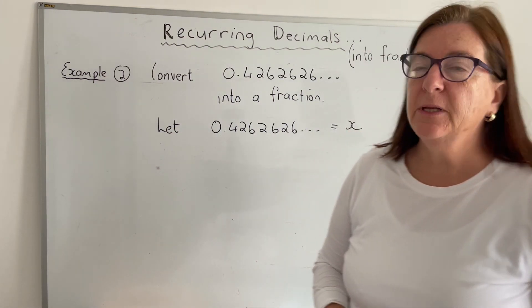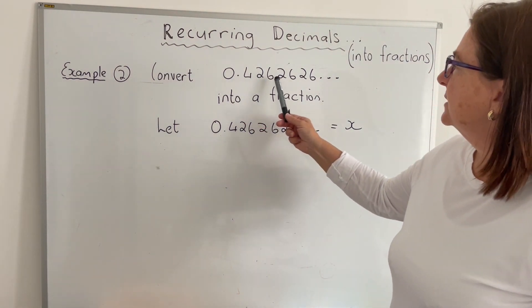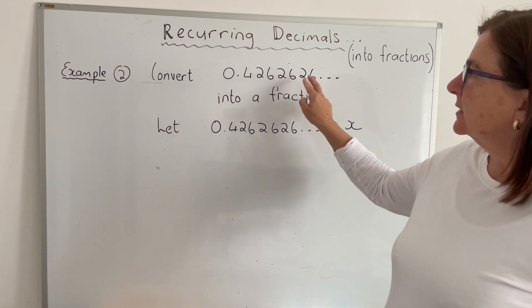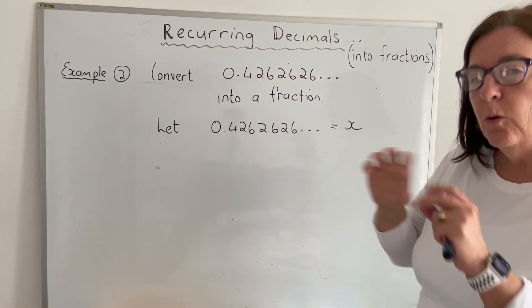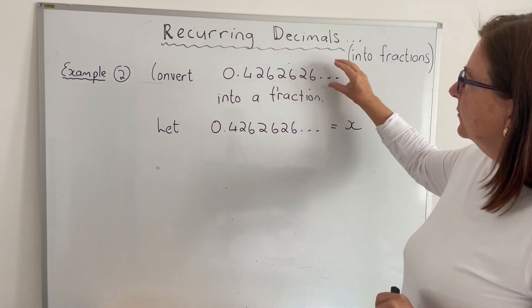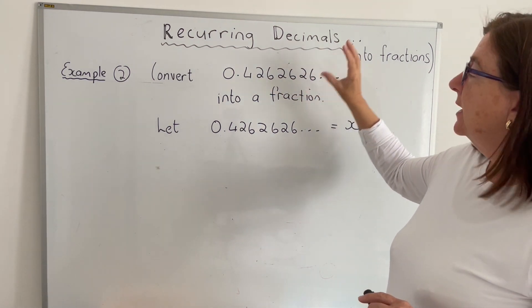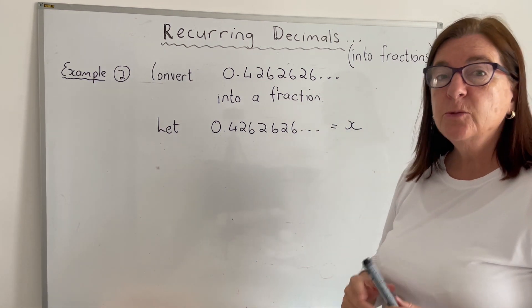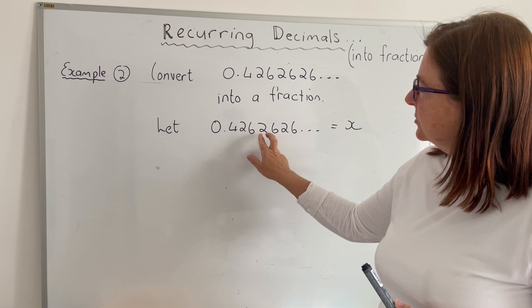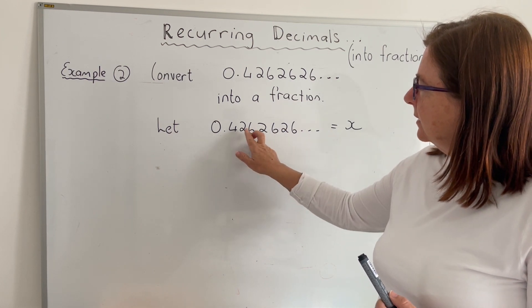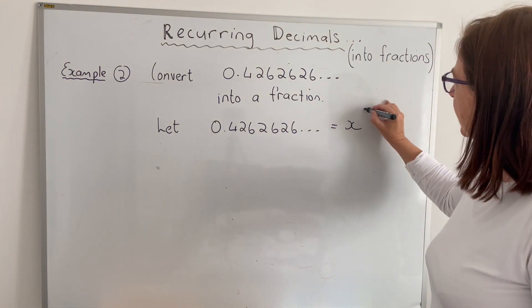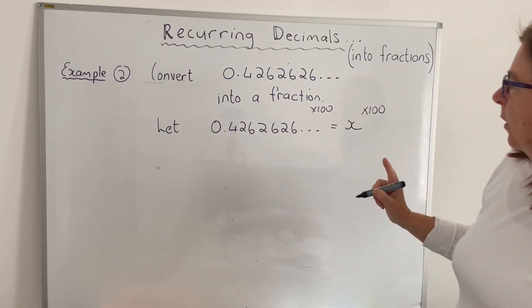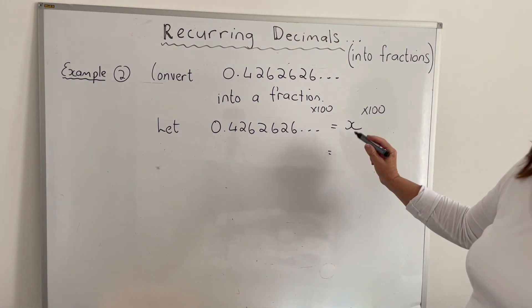Example 2. Now we need to convert 0.4262626 into a fraction. There is a recurring decimal there, 26 repeats itself. So once again, always the recurring decimal we want to convert into a fraction, let that equal x. Starting point. Now what do we multiply both sides by? Because the 26 is recurring, there's two digits that are recurring, we once again going to multiply both sides by 100.